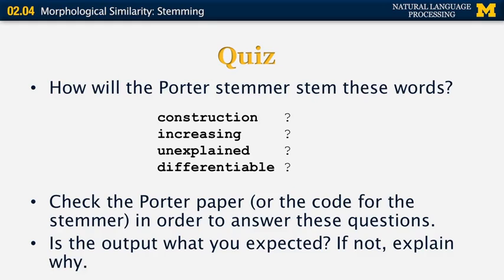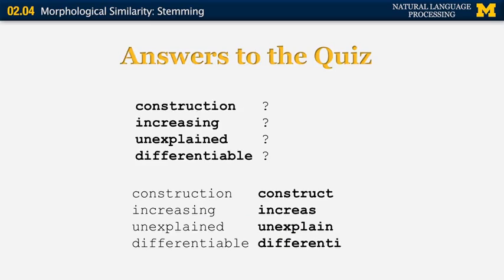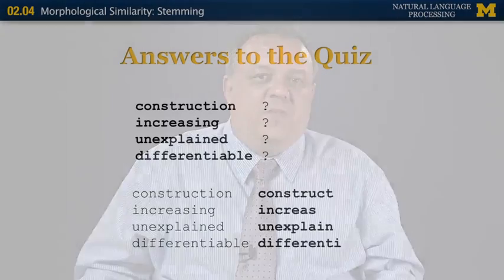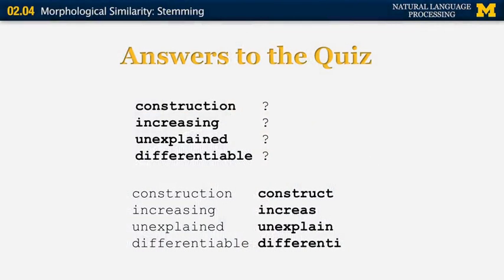The Porter stemmer converts 'construction' to 'construct', which is a good stem. 'Increasing' becomes 'increas' without the e, which is also a good stem since the final e in 'increase' is not part of the stem. 'Unexplained' remains 'unexplain' — you might expect 'explain' as the stem, but as mentioned, Porter's algorithm explicitly does not account for prefixes and only removes characters from the end of the word. Finally, 'differentiable' turns into 'differenti', which is probably not the expected stem and represents a case where Porter's algorithm falls short.